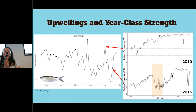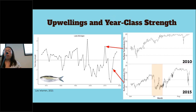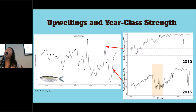Relating upwellings to year class strength: this plot shows year class strength across different years. Year class strength relates the success of larger adults entering the population — a number above zero means the population is doing well, while below zero means it did not. In 2010, when temperatures were warmer with no major upwellings, year class strength was positive. In 2015, there were two major upwelling events in early and late July, and that led to lower year class strength. The USGS collects this data annually and relates it back three years to see how that year class is doing.